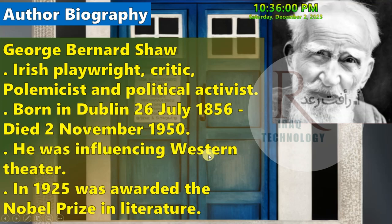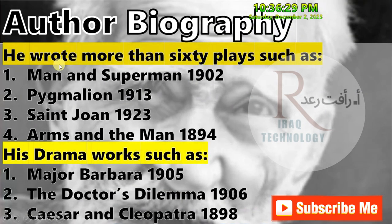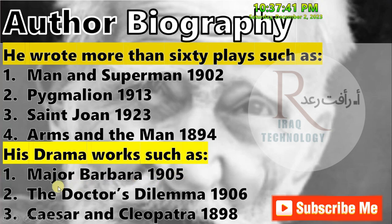He was influential in western theater. In 1925 he was awarded the Nobel Prize in Literature. He wrote more than 60 plays, such as Man and Superman (1902), Pygmalion (1913), Saint Joan (1923), and Arms and the Man (1894). His drama works include Major Barbara (1905), The Doctor's Dilemma (1906), and Caesar and Cleopatra (1898).